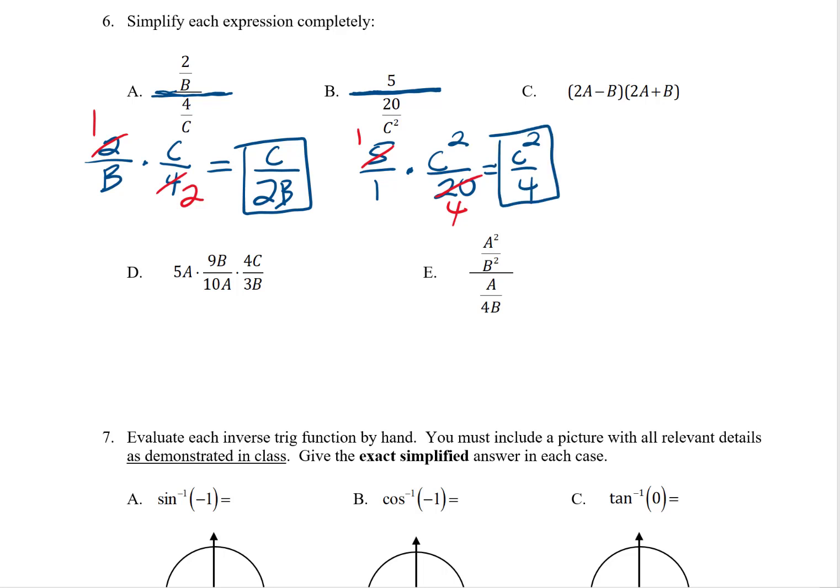Letter C is what we call a FOIL problem. It's a binomial times a binomial, and I just need to work through the four steps. FOIL stands for First, Outer, Inner, and Last. The first product, 2A times 2A, would be 4A squared. The outer would be 2A times B, so plus 2AB. The inner would be minus 2AB, and the last appears to be minus B squared. This one works out pretty nice because those two middle terms wipe each other out, and I'm left simply with 4A squared minus B squared.